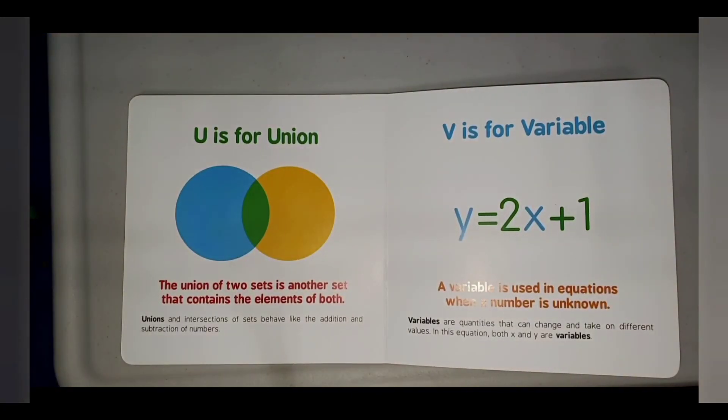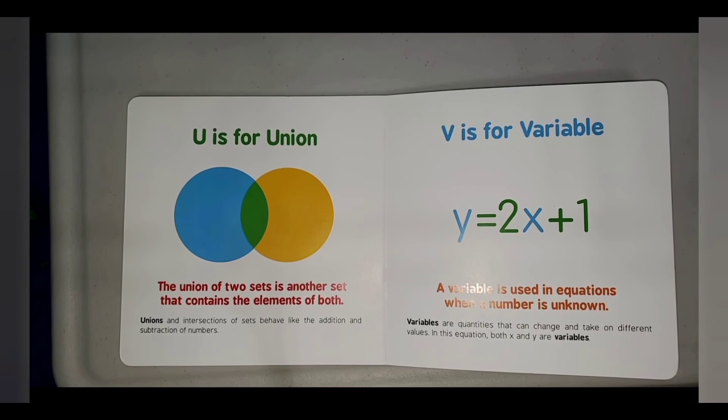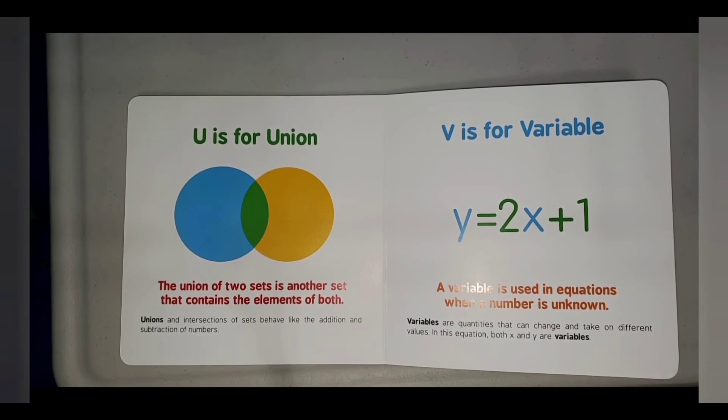V is for Variable. A variable is used in equations when a number is unknown. Variables are quantities that can change and take on different values. In this equation, both x and y are variables.